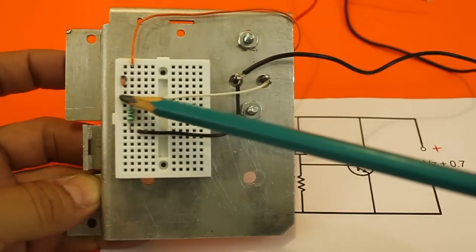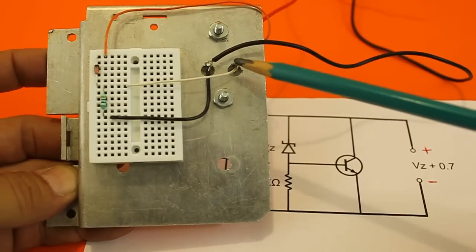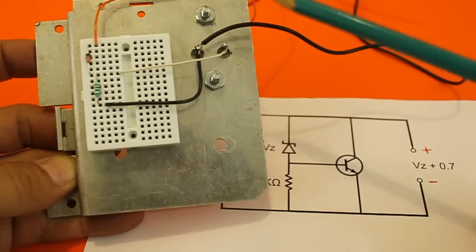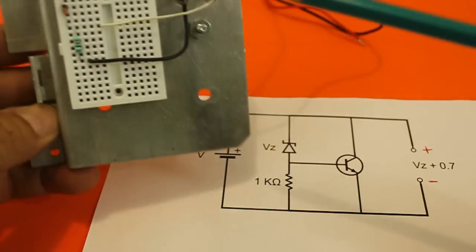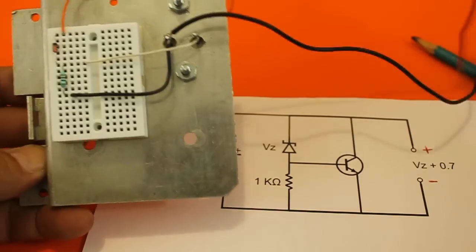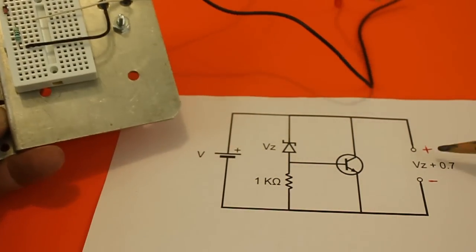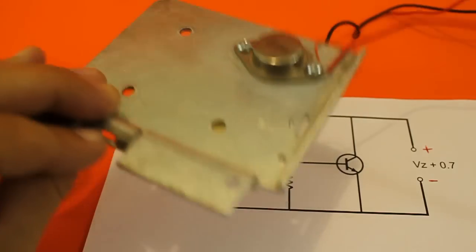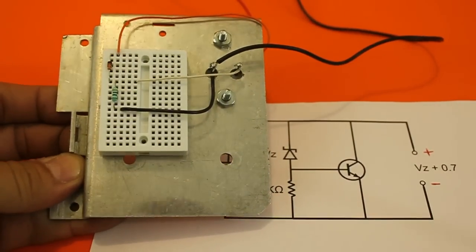The positive side goes to the base of the transistor, and the negative side goes to the collector, which is the case of the transistor, and from here to the positive of both the load and the power supply. We are using a power transistor here, and let's now see the circuit in action.